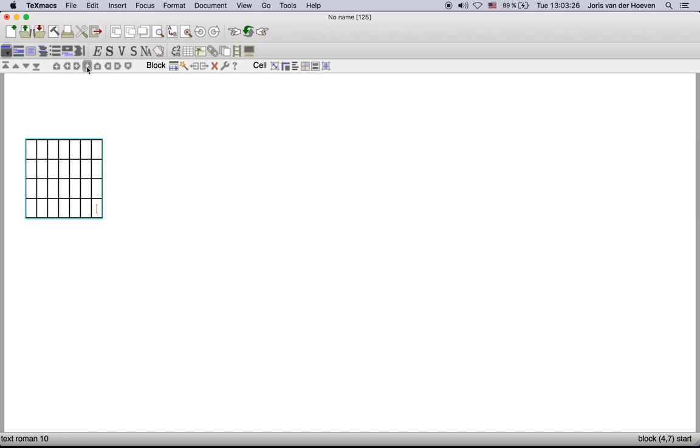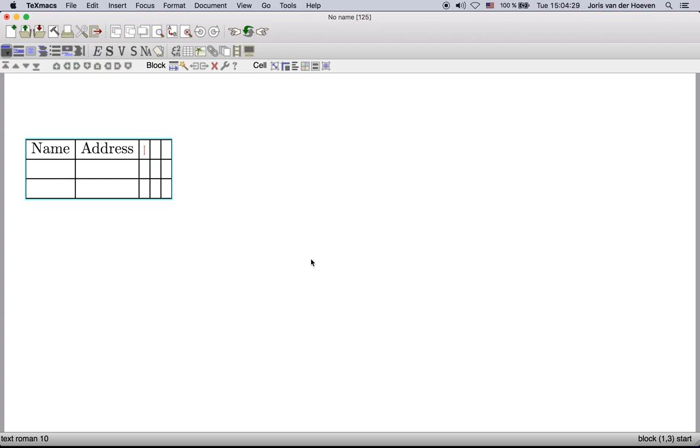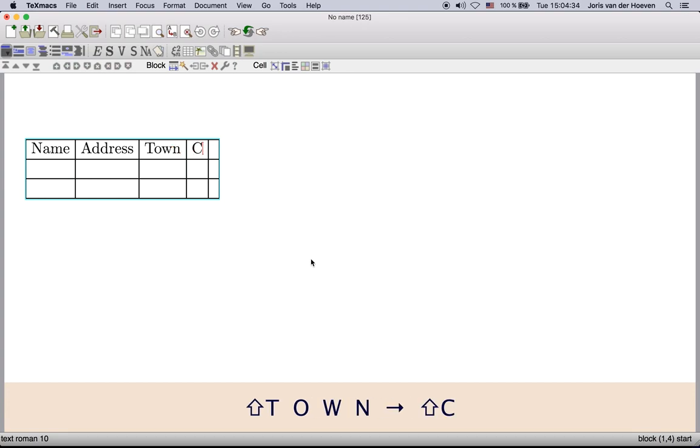You may also use the red icons here to remove rows and columns. Notice that the size of our small table automatically adapts to the text inside. If a row or column is completely empty then you may remove it by typing backspace. The enter key also inserts a new row while moving the cursor to the first column.